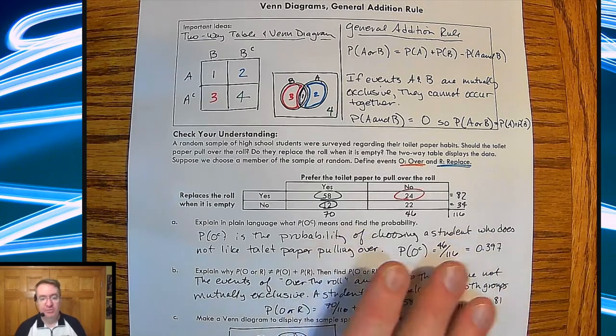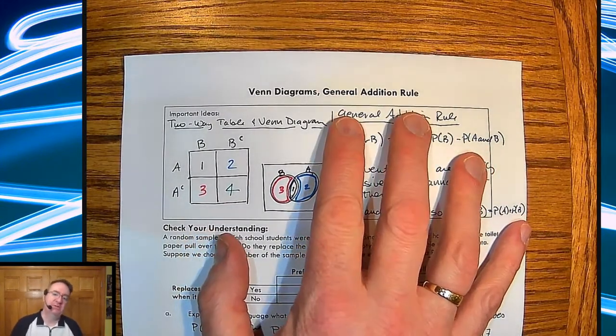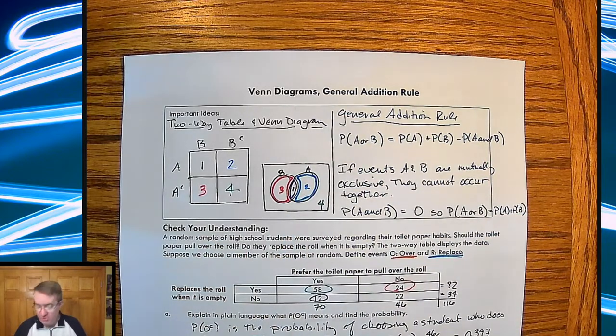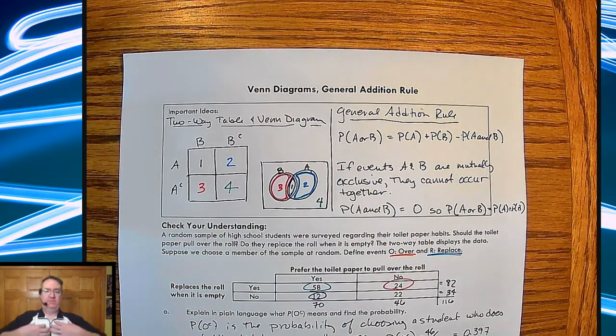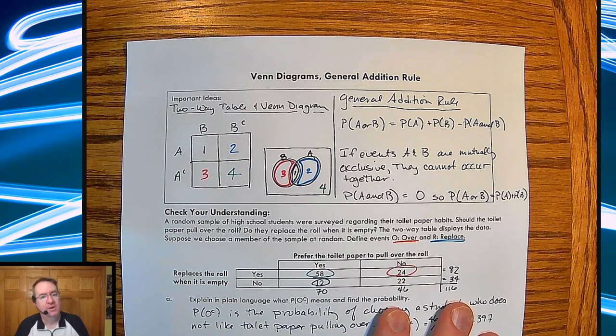So, that is it for the general addition rule. We're going to start getting some more specific rules in the last two lessons here in StatsMatic. Again, check them out at StatsMatic.com. I'm Mr. Hayes from Hayes' World of Math. If you have any questions, throw a comment down below. Hit subscribe, hit like, hit the little bell. Do all the things that you do on your gaming stations. And we'll see you in a few minutes.